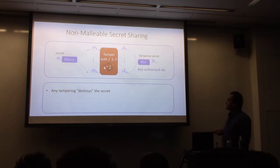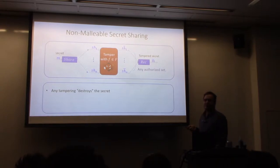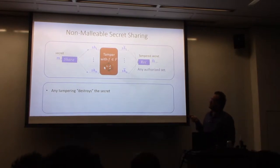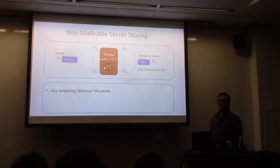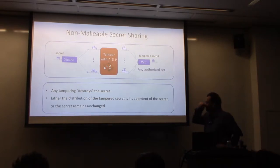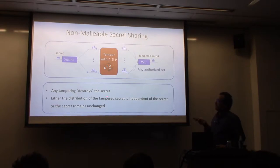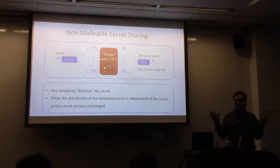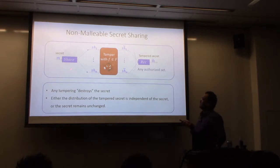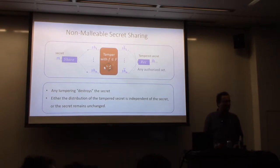Non-malleable secret sharing is one such notion, continuing this line of work. What we want in non-malleable secret sharing is: if an adversary tampers with all shares using some tampering function F from some class of tampering functions, then any tampering either entirely destroys the secret or does not tamper with the secret at all. In other words, either the distribution of the tampered secret M-tilde is independent of the original secret M, or the original secret remains intact — meaning the adversary chose not to tamper at all. The access structure remains the same.